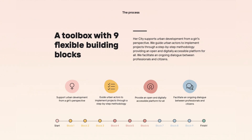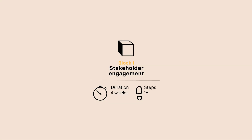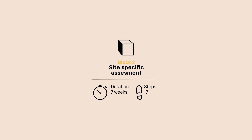The Toolbox is divided into three phases to illustrate the urban development process. Phase 1: Assessment. It includes Block 1, Stakeholder Engagement — to identify and recruit stakeholders and target groups. Block 2, Citywide Assessment — to assess the state of public spaces at the city scale and identify which areas are in most urgent need of improvement. Block 3, Site Specific Assessment — provides a methodology to assess and measure the quality of a selected open public space and its five-minute walk-in radius.